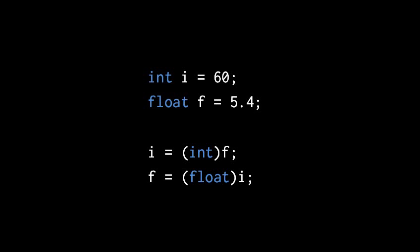In the next line, it's the same idea going the other way. To assign the value of i to f, we have to cast from an int to a float. So here the cast operation returns the value 5.0, and that's what gets assigned to f.